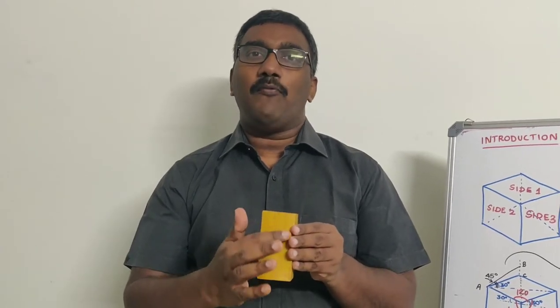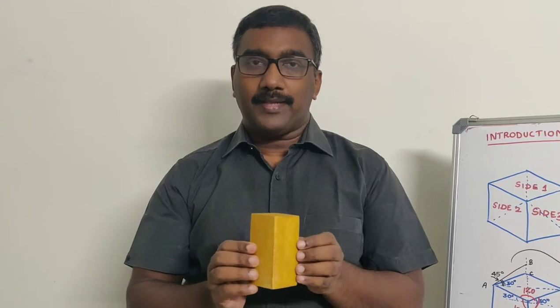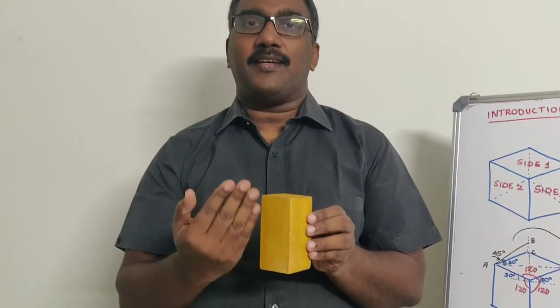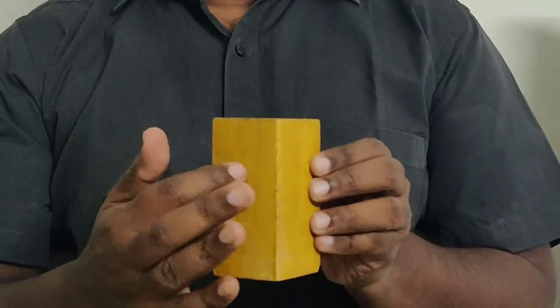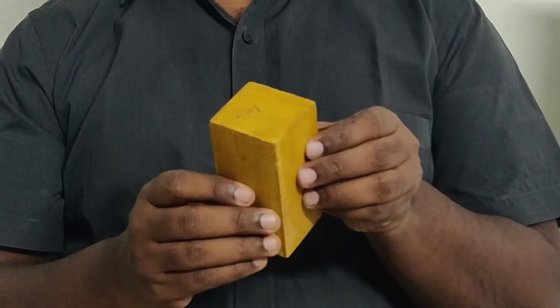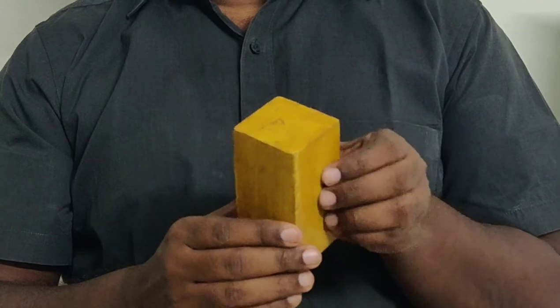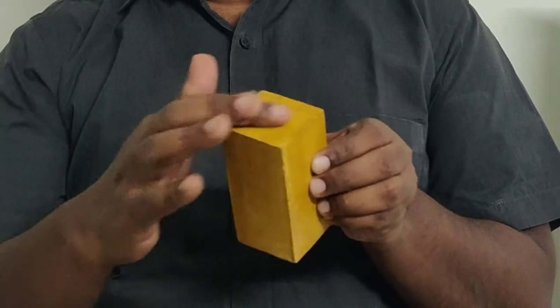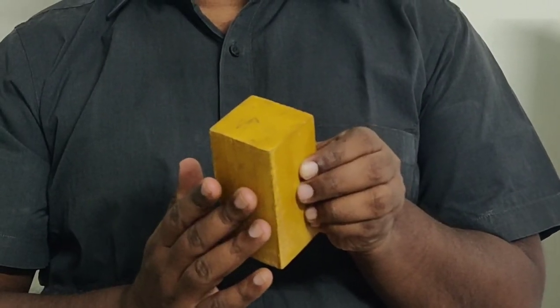Consider this square prism. If I am keeping the solid like this, you can see only one face of the solid. If I am keeping it like this — that is, all the bases are equally inclined to VP — you can see two faces. Suppose I am keeping it like this: you can see the front, one base edge, then two sides and lateral surfaces also.